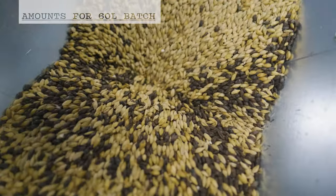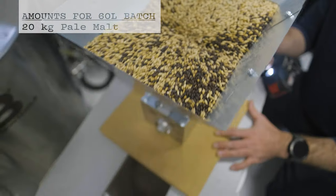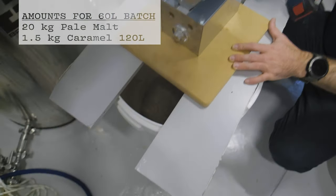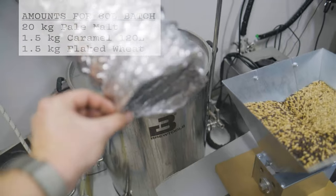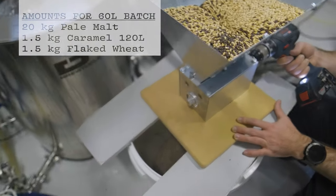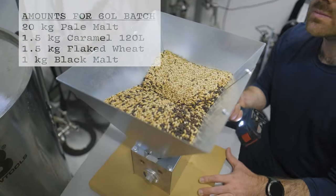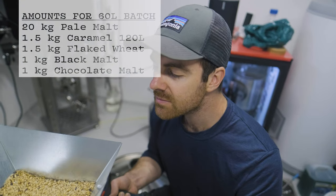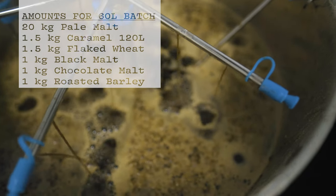For the fermentables, we use 20 kilograms of pale ale malt, 1.5 kilograms of caramel malt 120, 1.5 kilograms of flaked wheat, 1 kilogram of black malt, 1 kilogram of chocolate malt, and 1 kilogram of roasted barley.